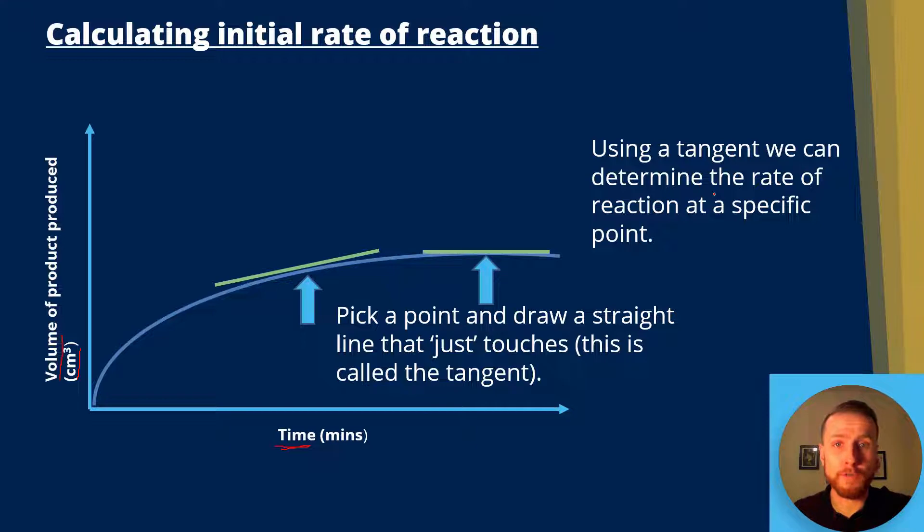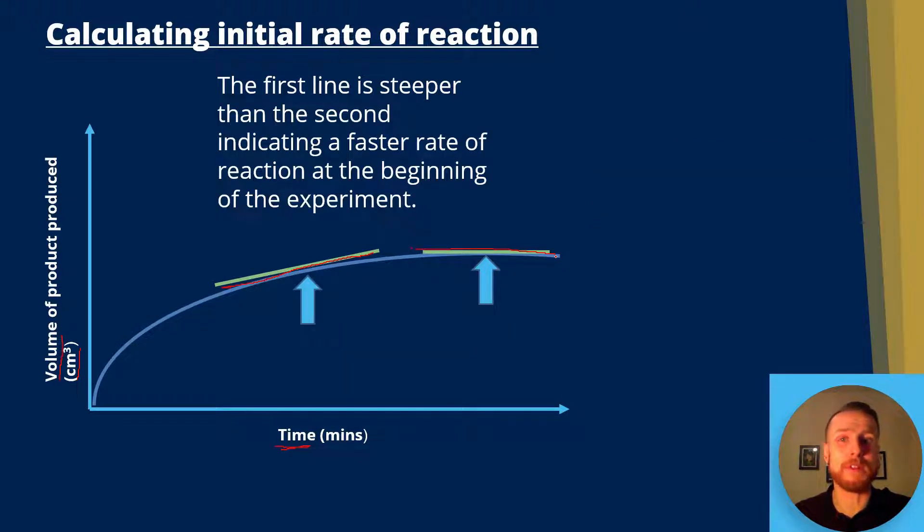Now we could do that on other points of the graph, and you can see here that the initial line is steeper than the second line, which is more horizontal. So we can think that the rate of reaction is probably higher in the first one, but using our tangent we can mathematically calculate this. Now the first line is steeper than the second, indicating a faster rate of reaction at the beginning of the experiment.